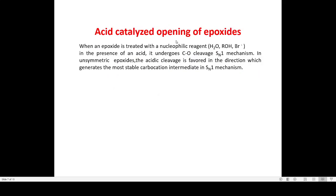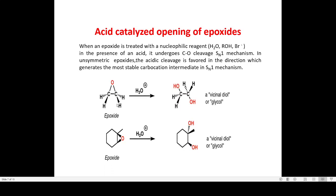Coming to the acid-catalyzed opening of epoxide: when an epoxide is treated with a nucleophilic agent such as water or OH⁻ in the presence of an acid, it undergoes C–O cleavage through an SN1 mechanism. In an unsymmetric epoxide, the acidic cleavage is favored in the direction which generates the most stable carbocation, mediated through the SN1 mechanism. For example, when the epoxide is treated under acidic conditions in the presence of water, we get a vicinal diol, commonly called a glycol.